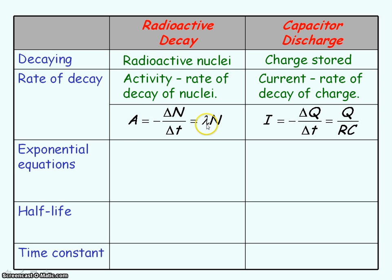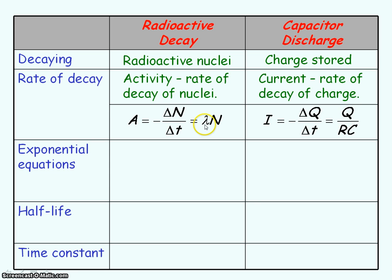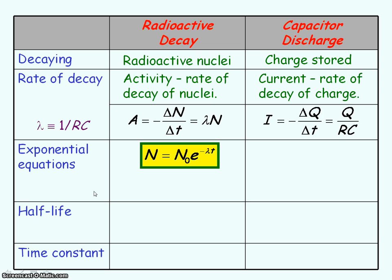Activity also equals the decay constant multiplied by the number of undecayed radioactive nuclei present. Current equals potential difference divided by resistance, and the potential difference across a capacitor is equal to the charge stored divided by the capacitance, so current equals Q divided by RC. As the activity is equivalent to the current and the radioactive nuclei N is equivalent to the charge stored Q, then the decay constant lambda is equivalent to 1 divided by RC.